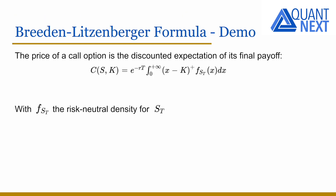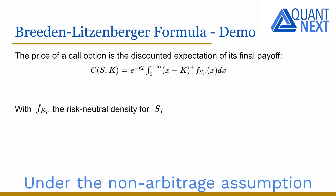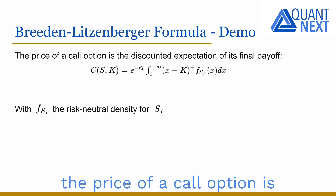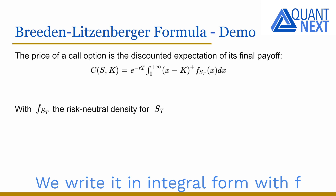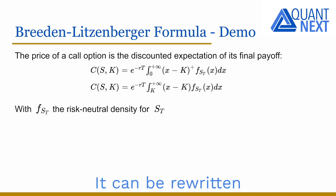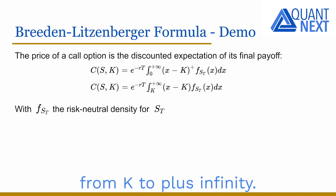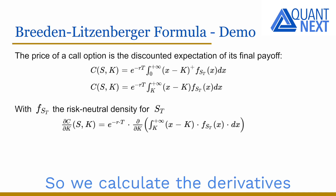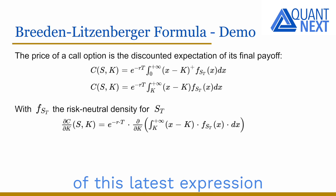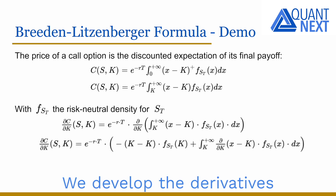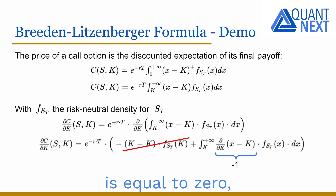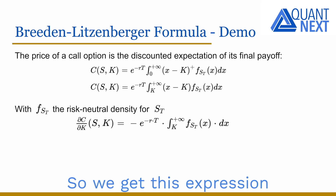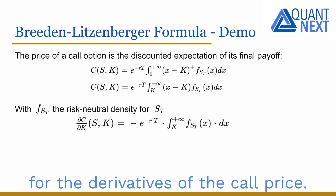So let's demonstrate it. Under the no-arbitrage assumption with no transaction costs, the price of a call option is the discounted expectation of its final payoff under the risk-neutral probability Q. We write it in integral form with f the risk-neutral density for S_T. It can be rewritten with the integral from K to plus infinity. We then calculate the derivative of this expression with respect to K, developing it into two terms. We easily see that the first one is equal to zero while the second one simplifies, giving us an expression for the first derivative of the call price.